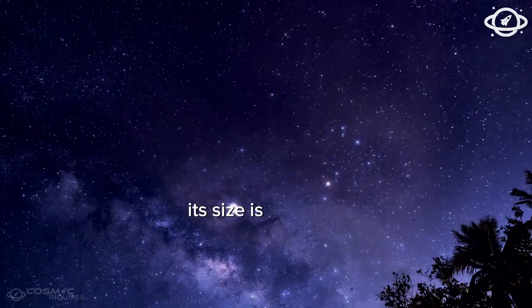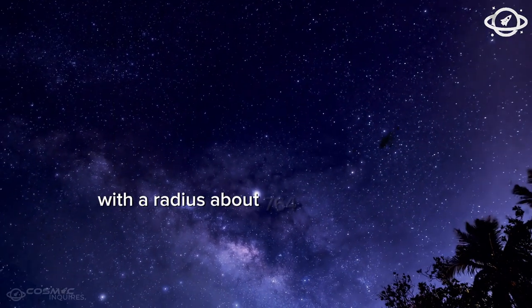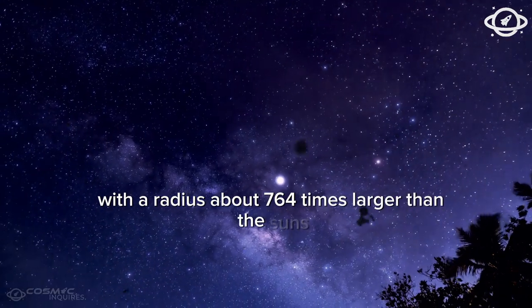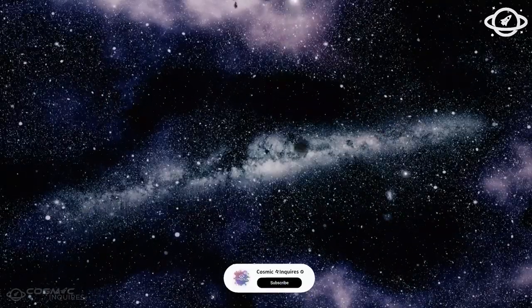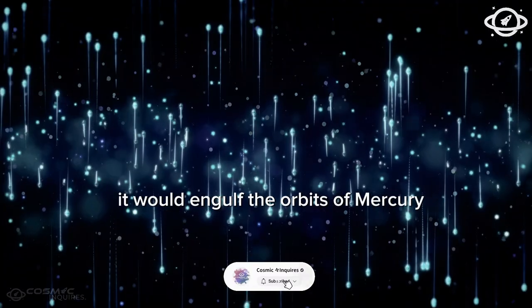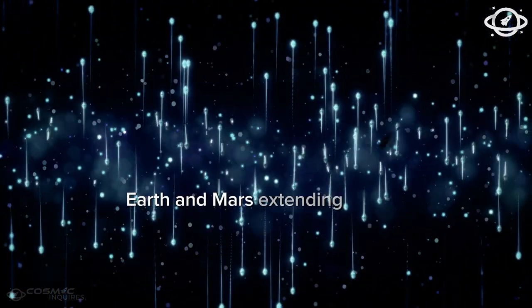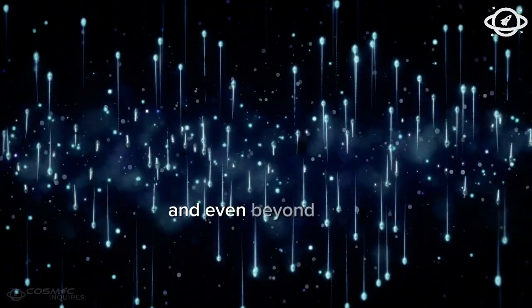Its size is staggering, with a radius about 764 times larger than the sun's. If it replaced the sun in our solar system, it would engulf the orbits of Mercury, Venus, Earth, and Mars, extending past the asteroid belt and even beyond Jupiter.